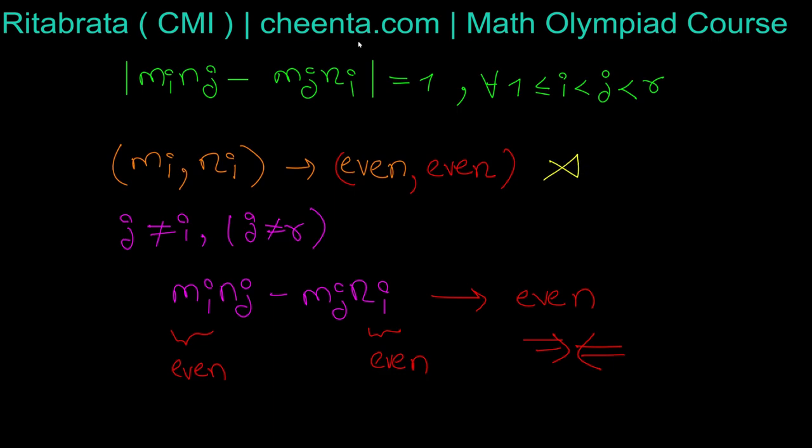This is a good observation. So all pairs that can occur are: (odd, odd), (odd, even), or (even, odd).